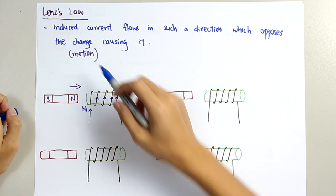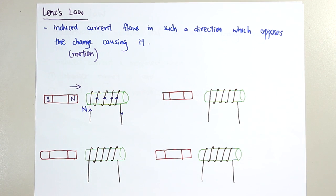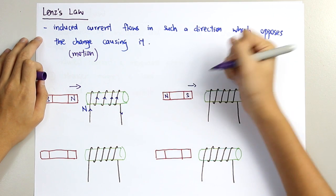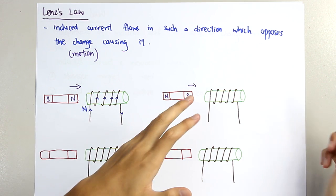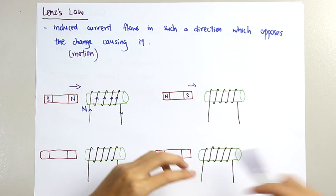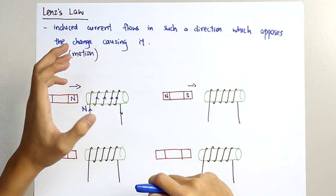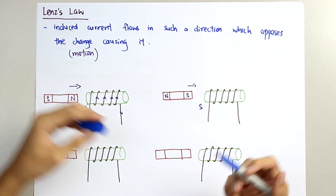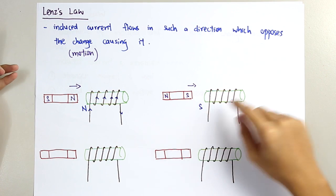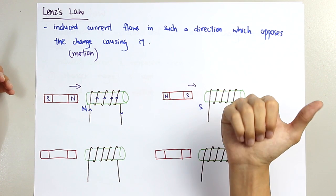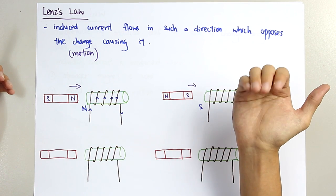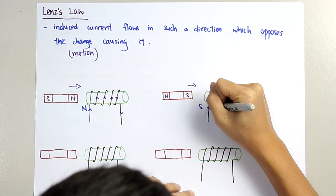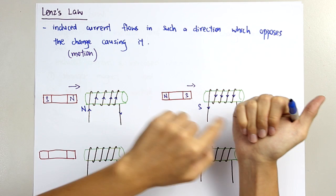In the same way, for the second diagram where we again have a North Pole and a South Pole moving toward the right, to oppose the motion the near side of the solenoid should temporarily become a South Pole, so that it repels the magnet. Applying the right-hand grip rule, the induced current flows in this direction, making this side a South Pole.